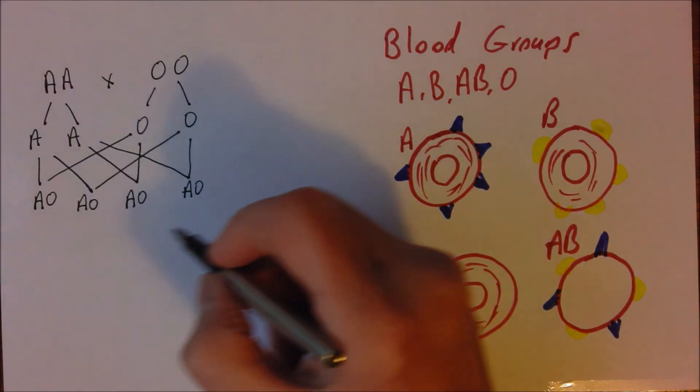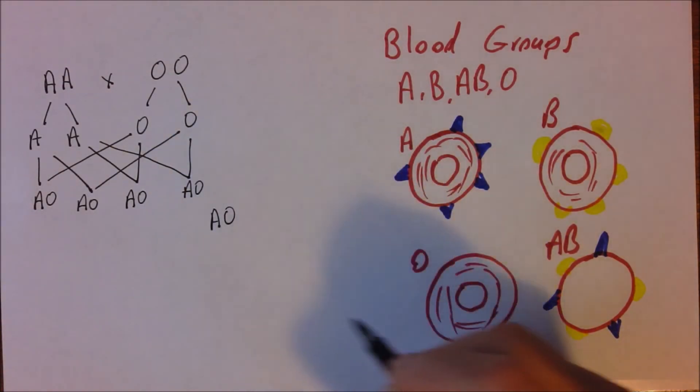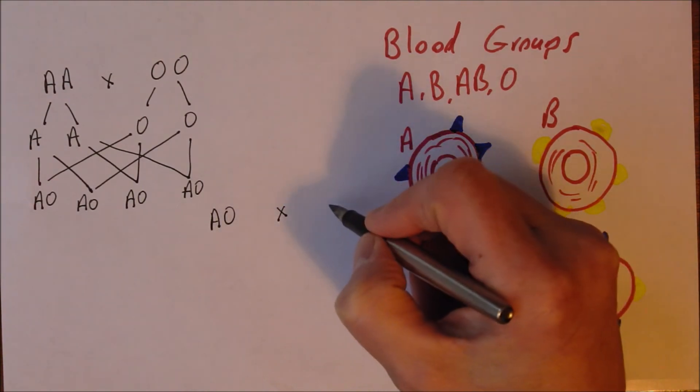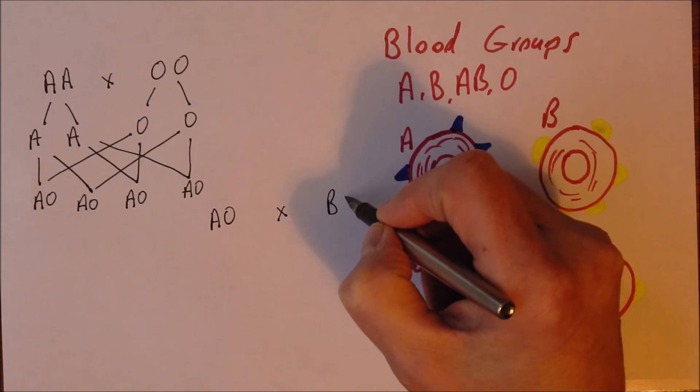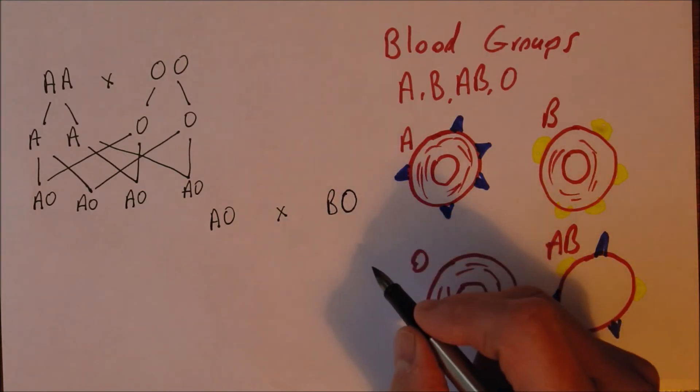So let's think of another example. Let's think of AO. And let's suppose that they marry someone whose blood group B but is heterozygous genotypically. You wouldn't know that by looking at them but they are heterozygous.